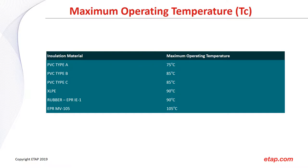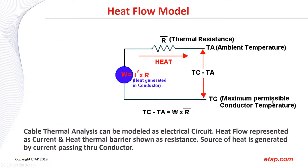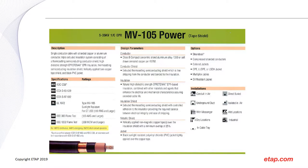The maximum operating temperature is the TC value — the maximum permissible conductor temperature. Depending on the installation material of your cable, you'll have a different maximum operating temperature. For example, PVC Type A insulation has a maximum operating temperature of 75°C, while an EPR medium voltage cable has a maximum operating temperature of 105°C. The insulation material has a direct impact on the maximum temperature.